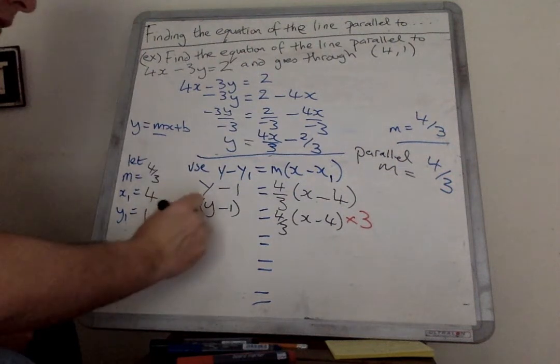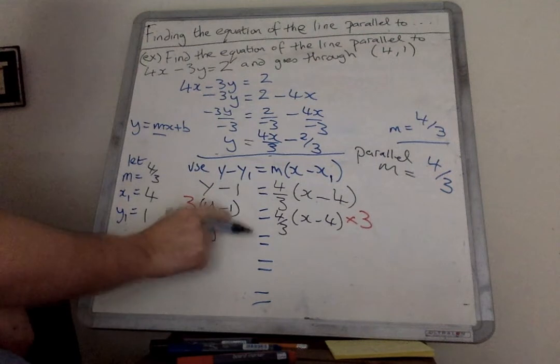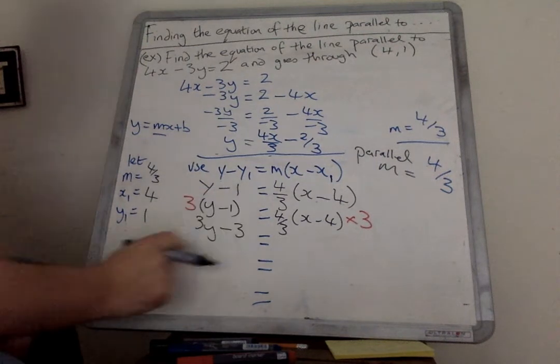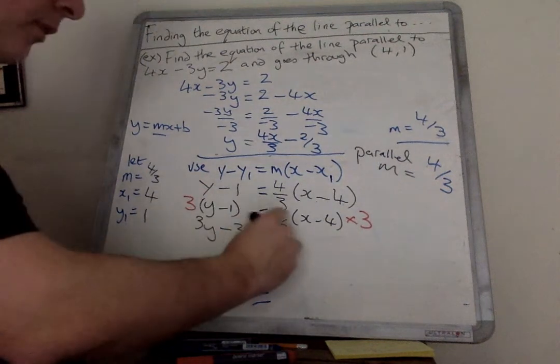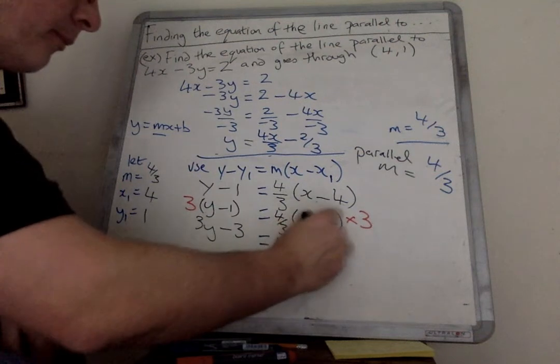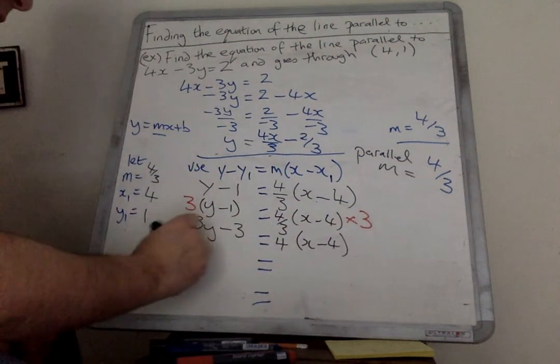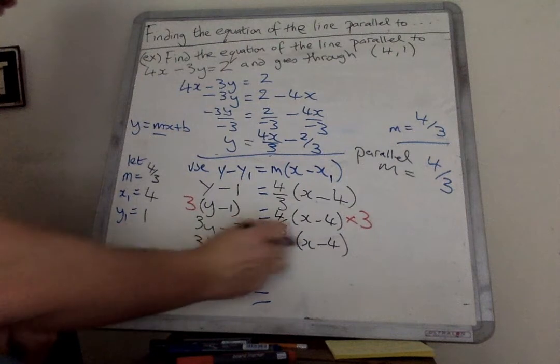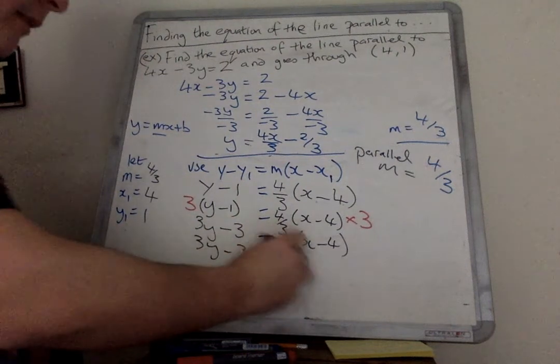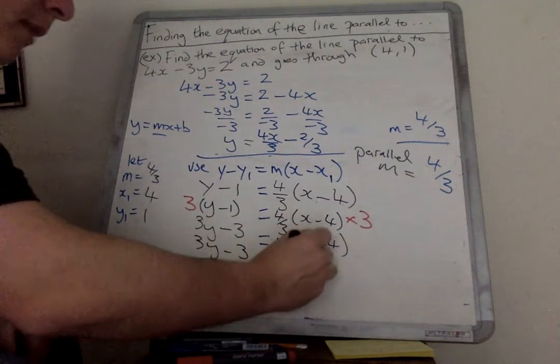This I'm going to times out. So 3 times y is 3y. 3 times minus 1 is minus 3. We've said this here is just like that now. So this one's already tidied up. 4 times the x is 4x. 4 times minus 4 is minus 16.